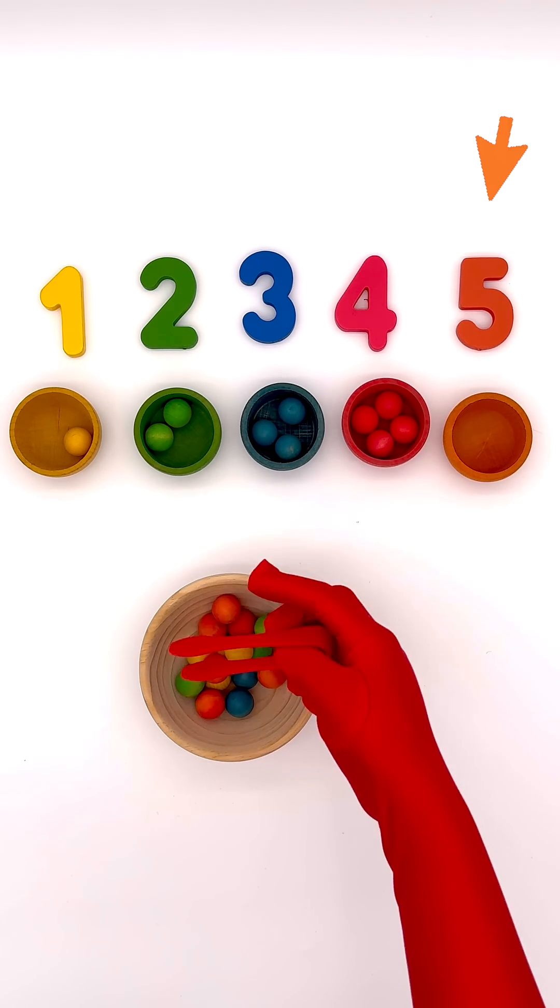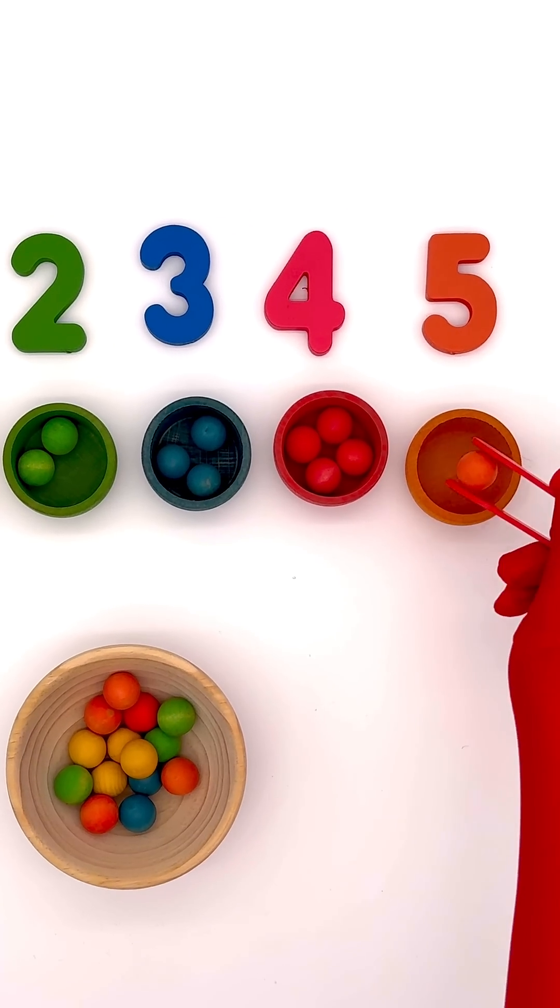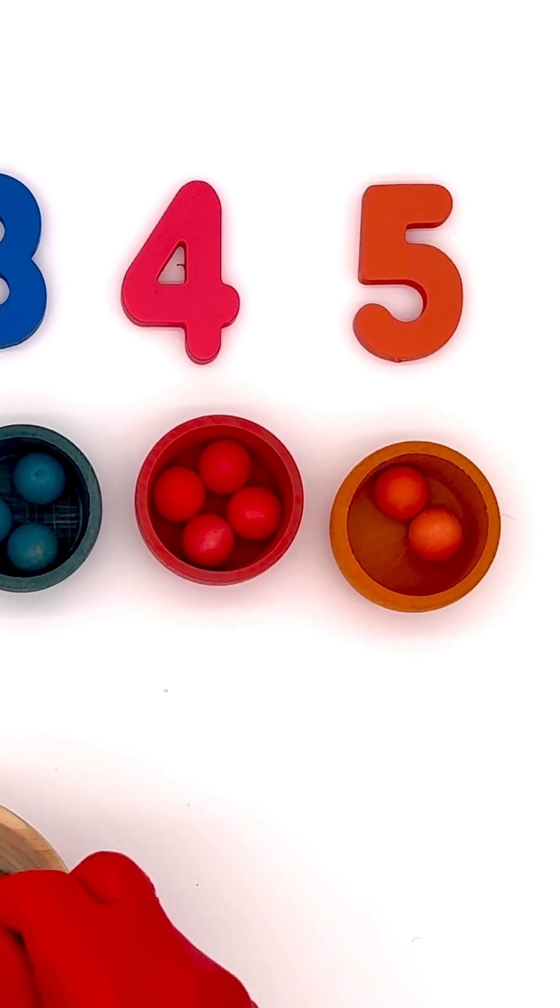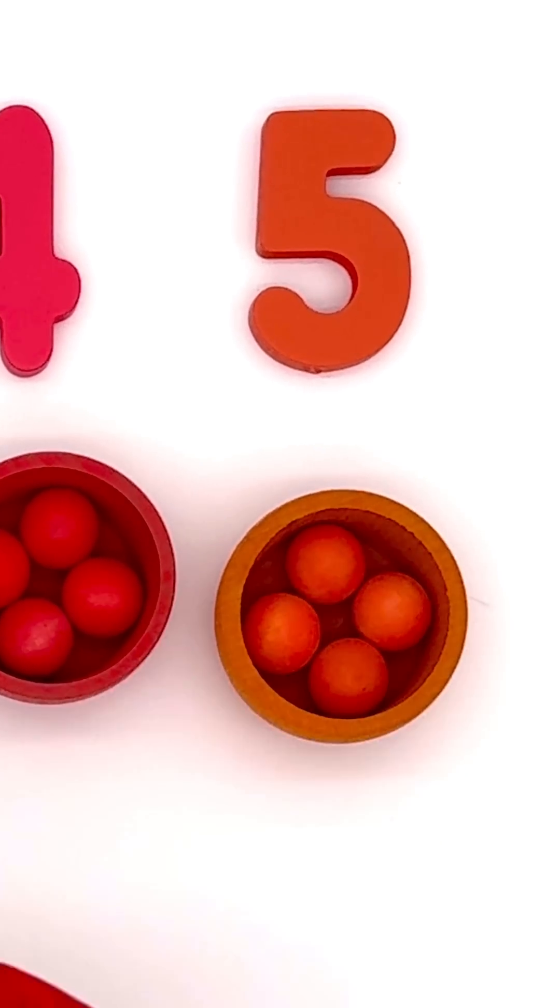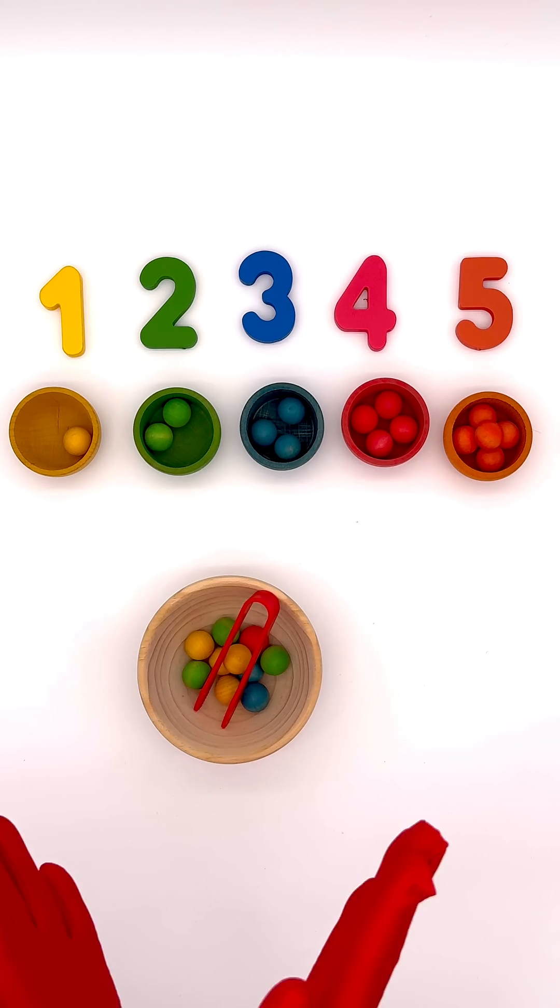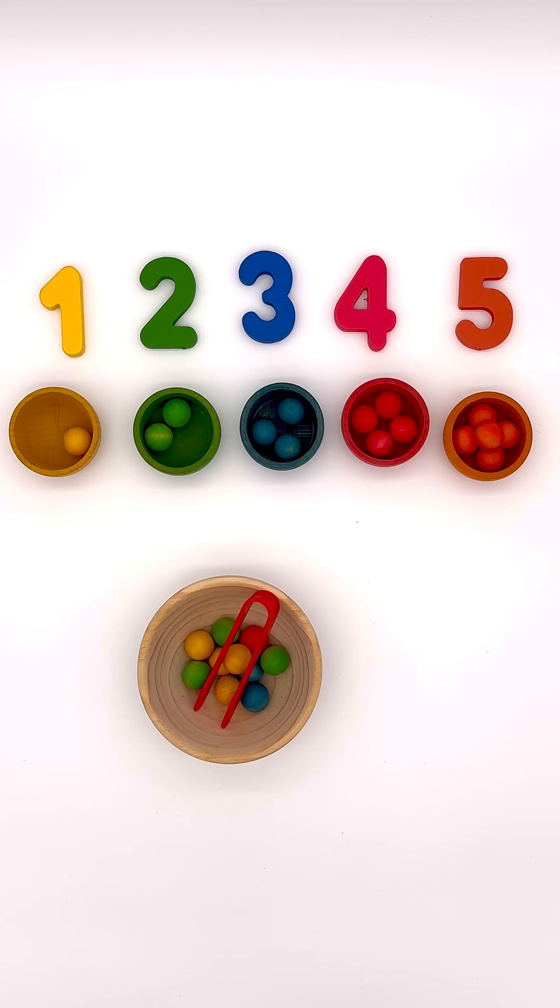Well done. And now five. Five is orange. Yes, it's orange. One, count with me. Two, three, four, five. We have five orange balls. Well done little counters. See you again.